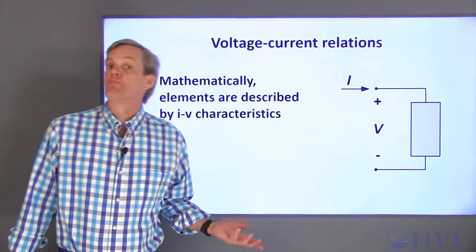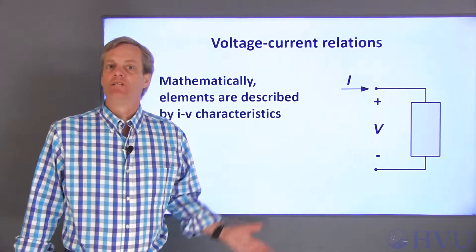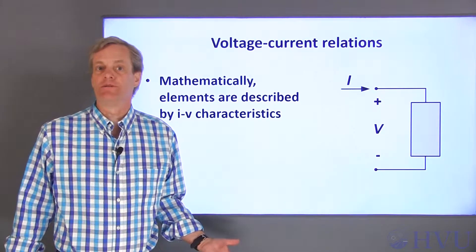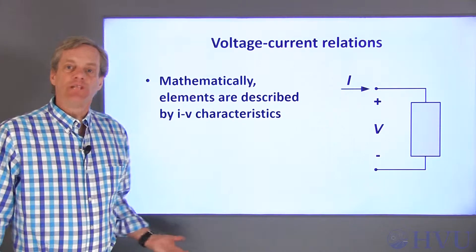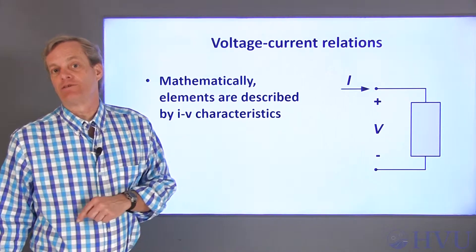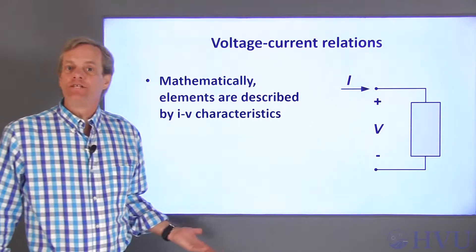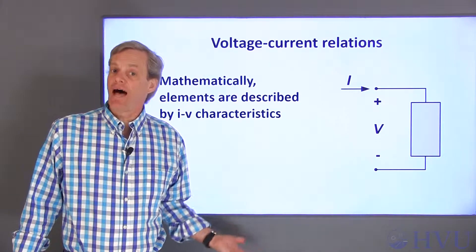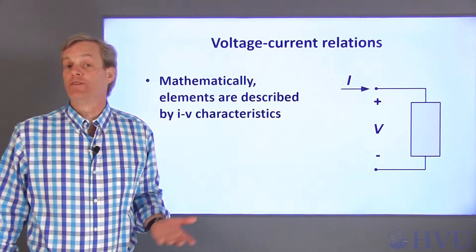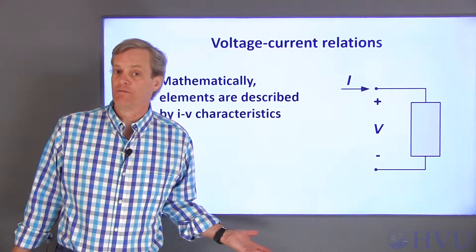Circuit elements are modeled mathematically by relationships between the voltage and the current at their terminals. These relationships are called the element's voltage-current characteristics. If the relationship is presented graphically, the plot of current versus voltage is called the voltage-current curve, or the IV curve.